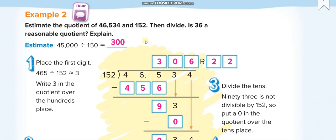Okay, here now we have to divide 152. The divisor is 152 and the dividend is 46,534. We'll take three digits because we have three digits in the divisor.